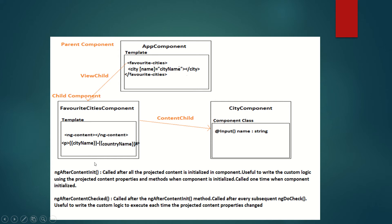This is called content projection, which we have discussed in detail in a previous video. CityComponent is projected into FavoriteCitiesComponent, so CityComponent is the content child of FavoriteCitiesComponent. If you want to get the properties and methods of CityComponent within FavoriteCitiesComponent, you have to use the ContentChild decorator. If multiple cities are projected, you use ContentChildren. These decorators were also discussed in detail in a previous video.